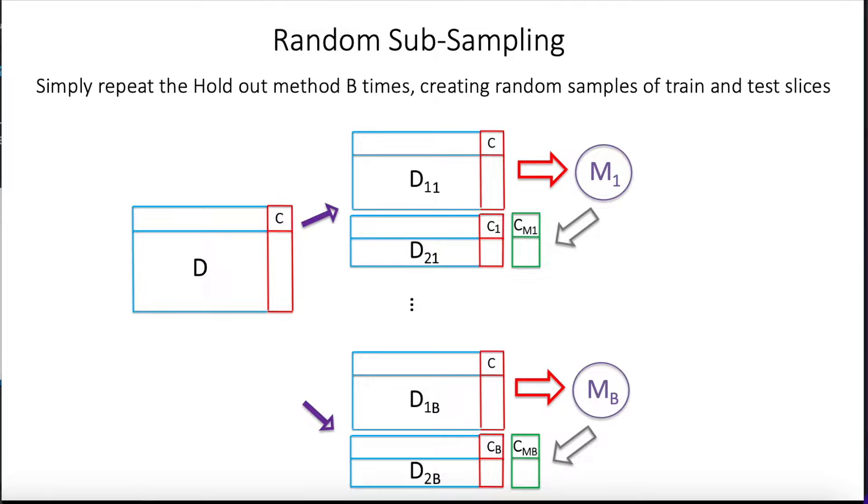So now the next method is called random subsampling, which is basically a repeated holdout. So instead of just once dividing the set into training and test, we're going to repeat that procedure B times. So as we can see here, we go and first divide our database into two sets, training and testing. We train one model M1, and then we classify the data points that were held out here, and we create a prediction, right?